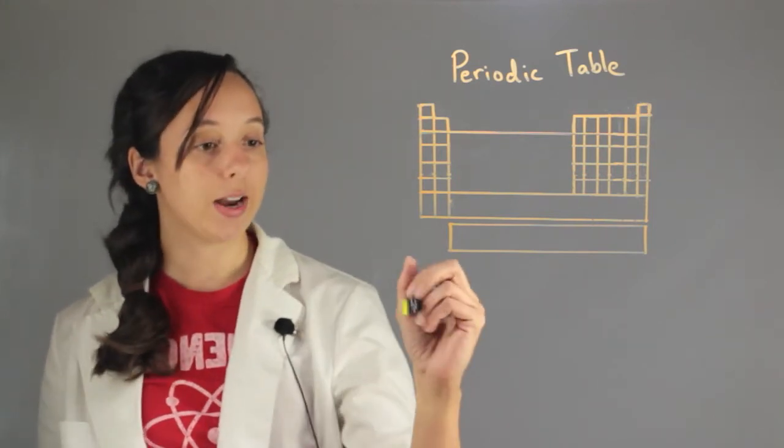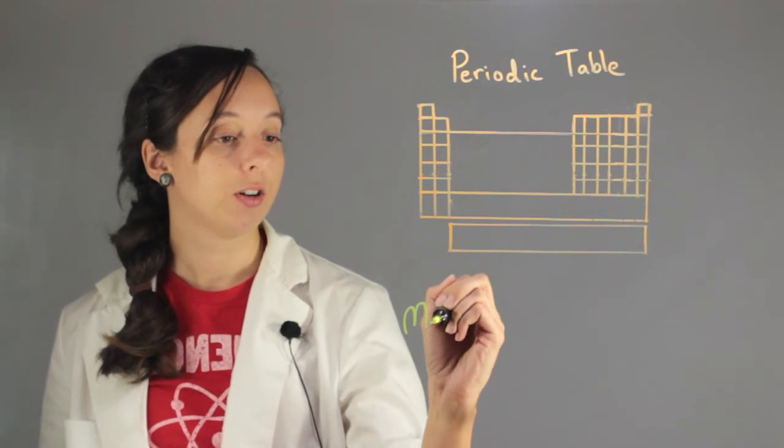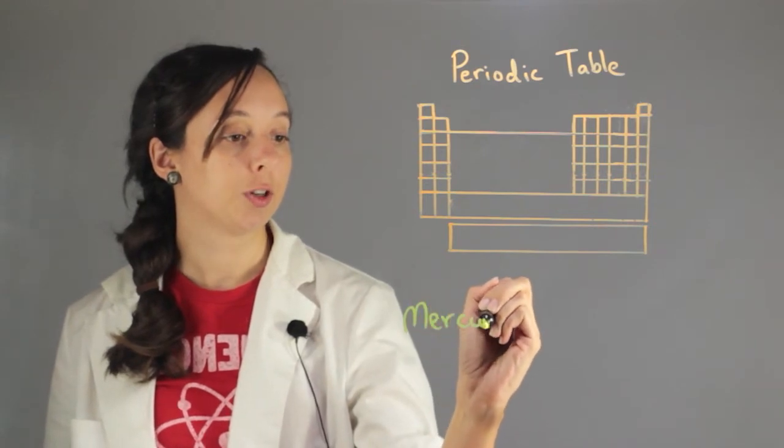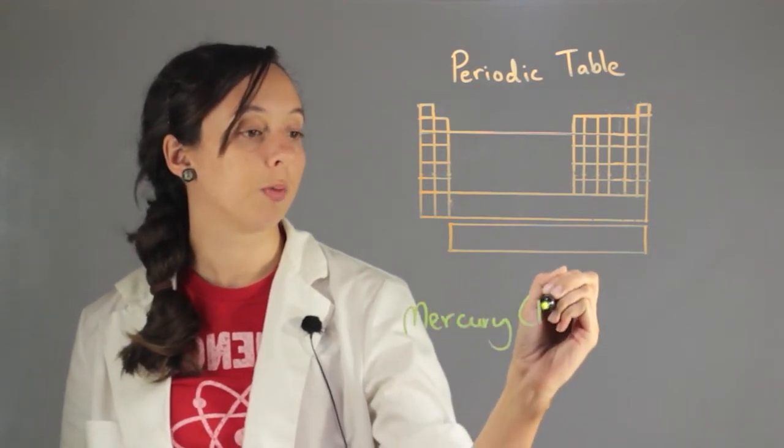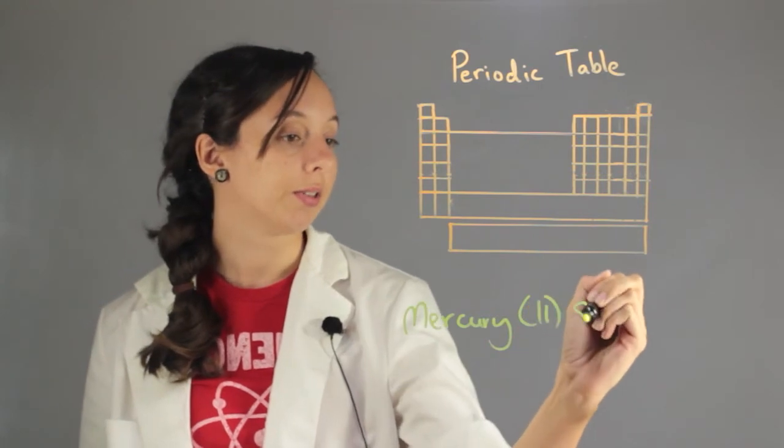Alright, so when we write out mercury(II) sulfide, we write it like this: mercury Roman numeral two parentheses sulfide.